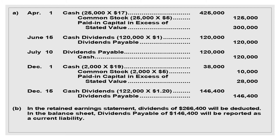December 1 — another common stock issuance: Cash is debited $38,000, Common Stock is credited at stated value $10,000, and Paid-in Capital in Excess of Stated Value is credited $28,000. On December 15, another declaration: Cash Dividends is debited $146,400 (122,000 total shares × $1.20), and Dividends Payable is credited the same amount.